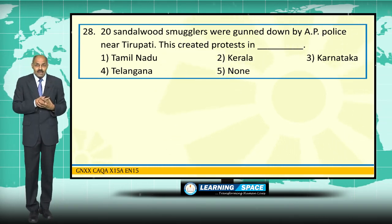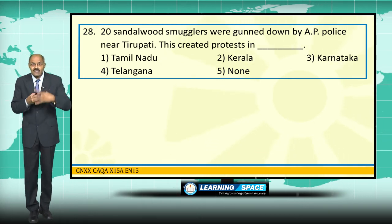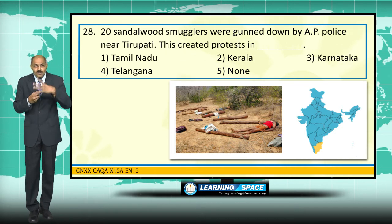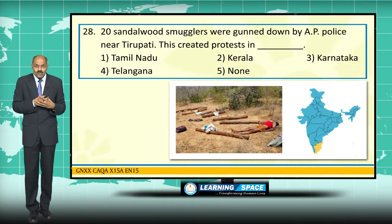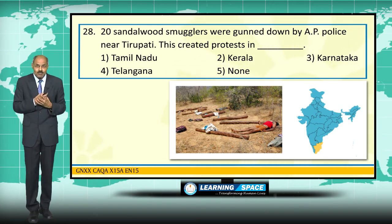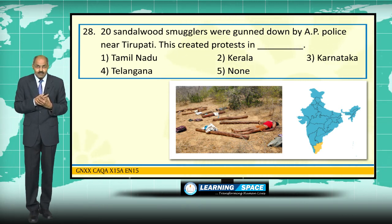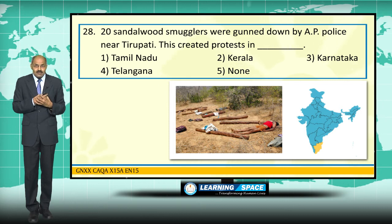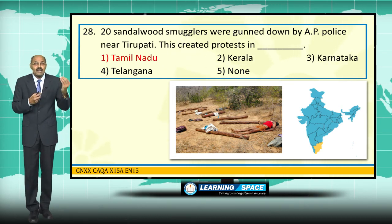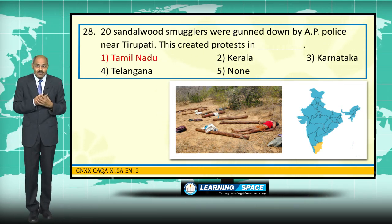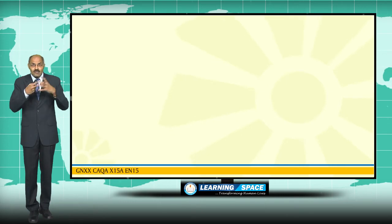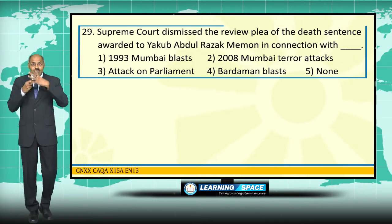20 sandalwood smugglers were recently gunned down in the Seshachalam forest area near Tirupati in Andhra Pradesh — an area famous for sandalwood. This created a lot of controversy as all 20 persons belonged to Tamil Nadu, and statewide protests erupted across Tamil Nadu.